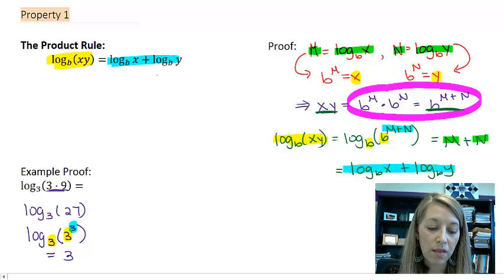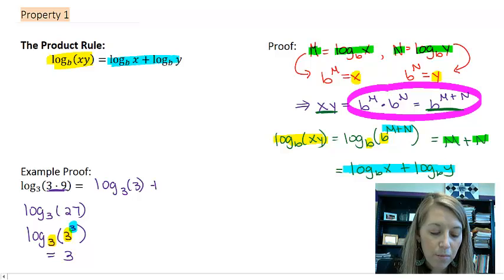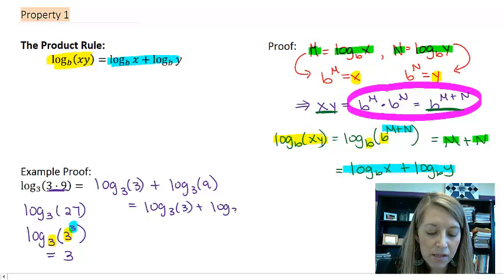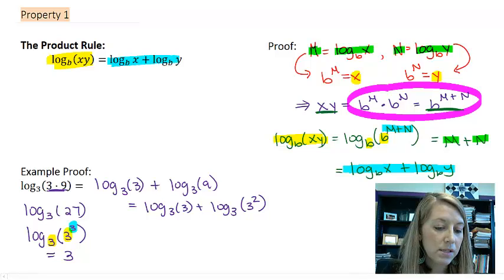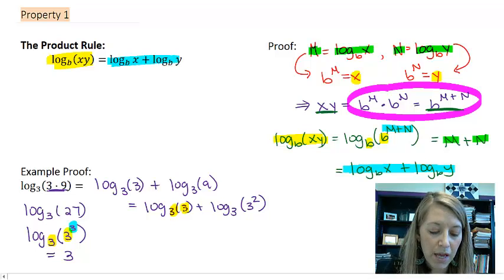Now, if I work it this way using this product rule, this is log base 3 of 3 plus log base 3 of 9. I'm going to rewrite it as 3 squared. Same property that we've seen multiple times. Anytime my bases match, that means they cancel out, and that means I'm left with my exponent.